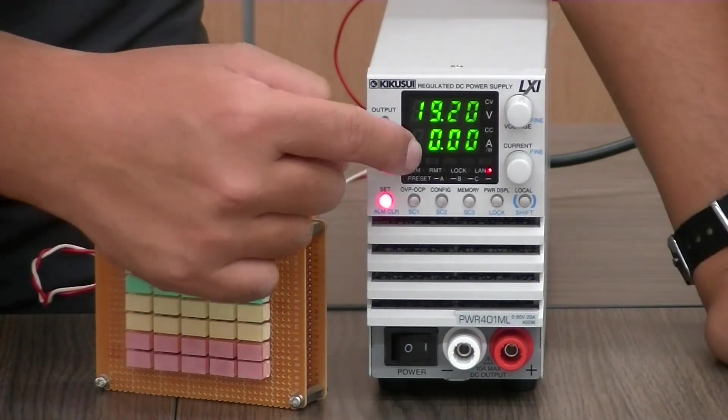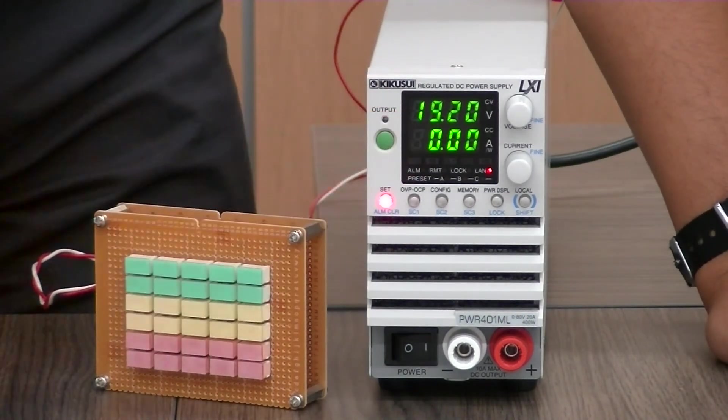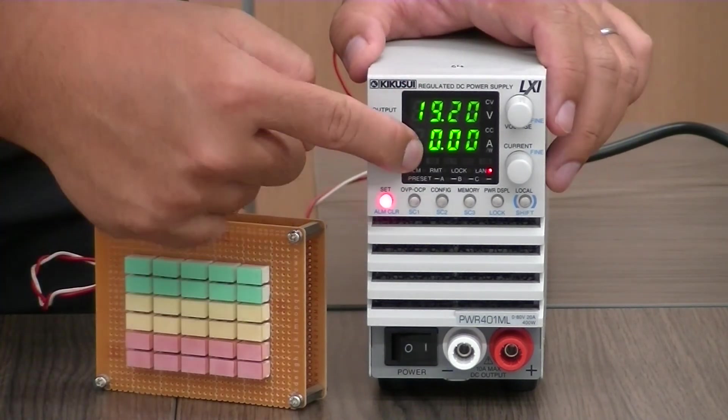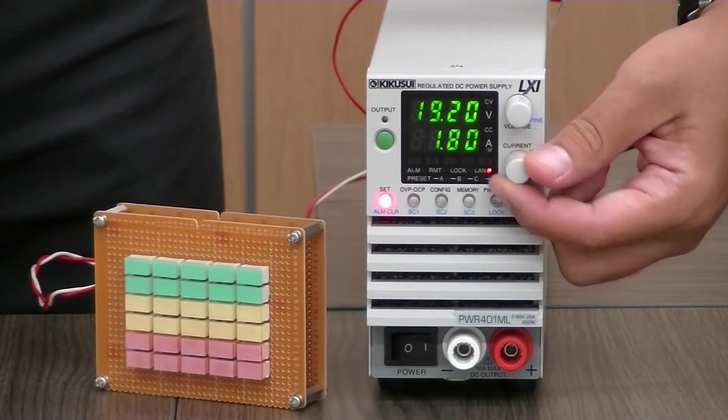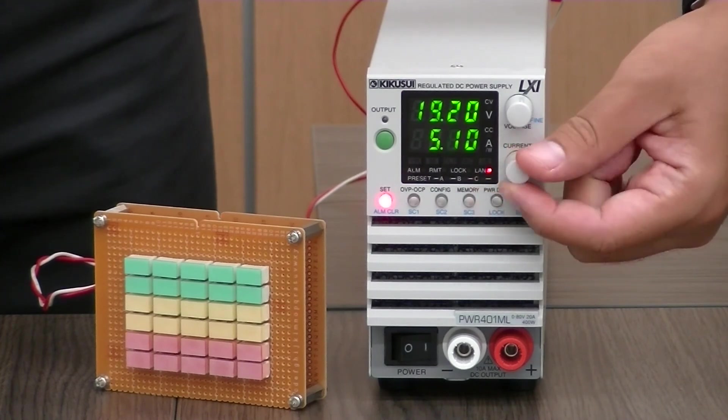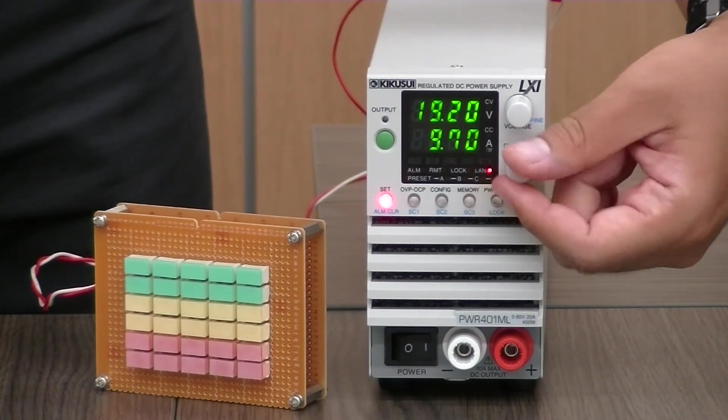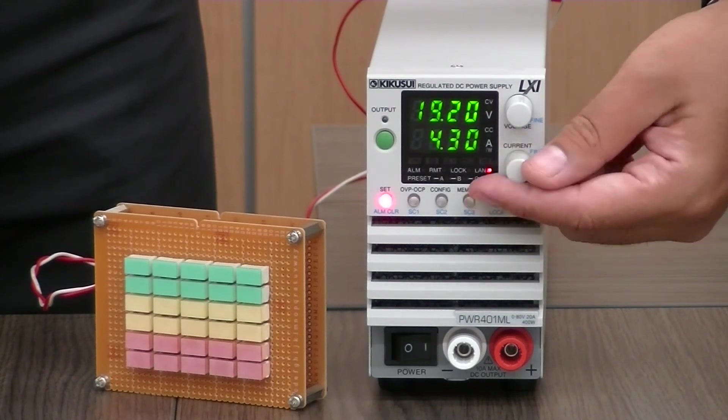And it works as well. Below the voltage meter you will see the current meter. So if you turn the knob clockwise you will increase the current, counterclockwise will reduce the current.